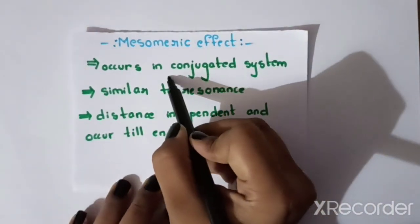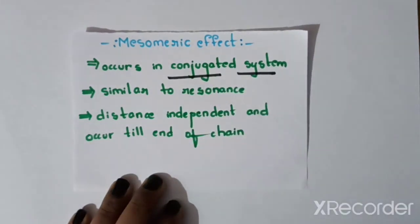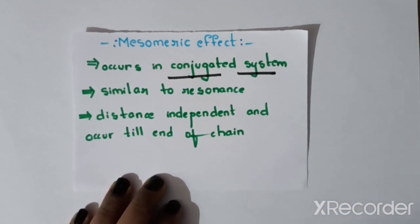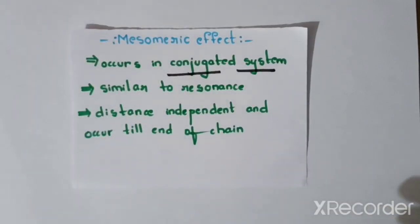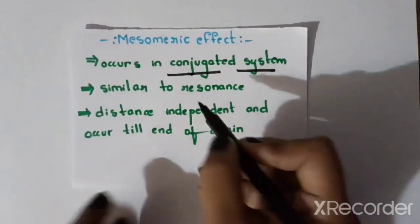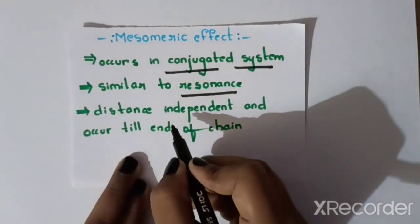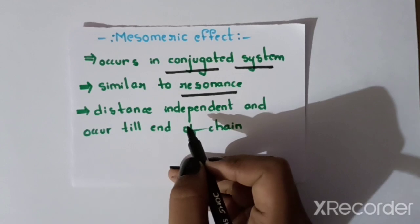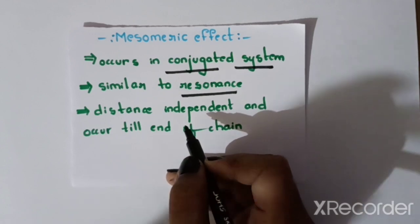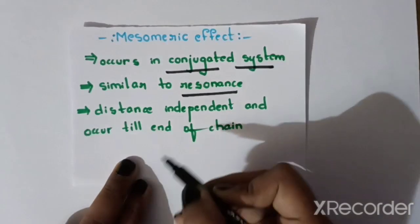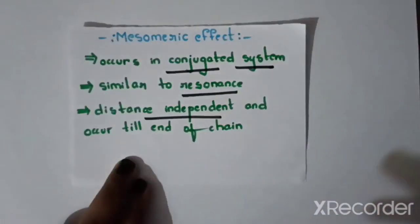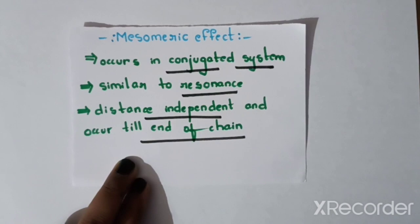The mesomeric effect involves a conjugated system. The conjugation conditions relate to conjugation. Resonance has already been explained. The inductive effect is a distance-dependent effect, whereas the mesomeric effect is a distance-independent effect. The mesomeric effect is a continuous effect throughout the conjugated system.